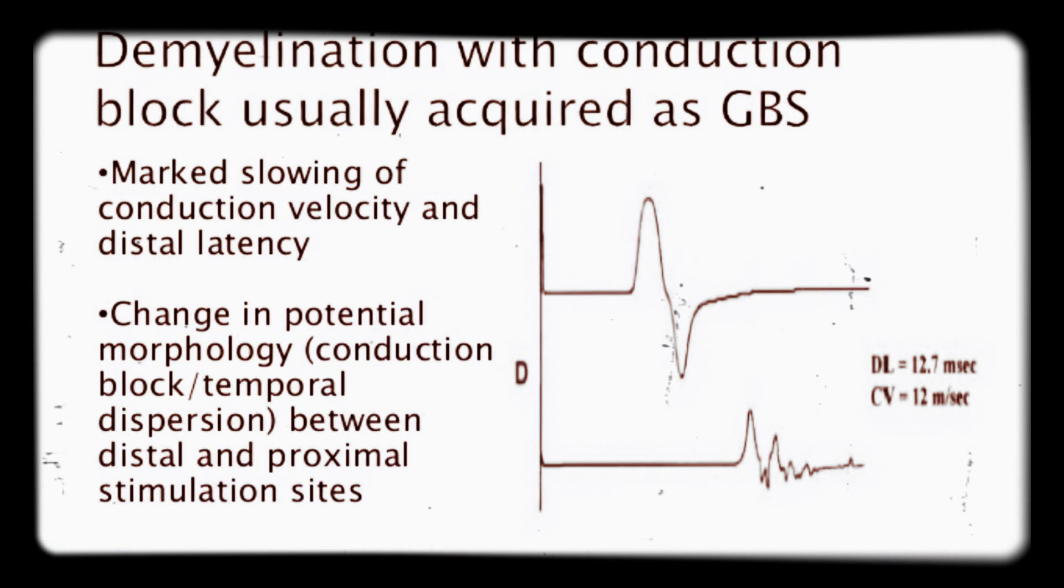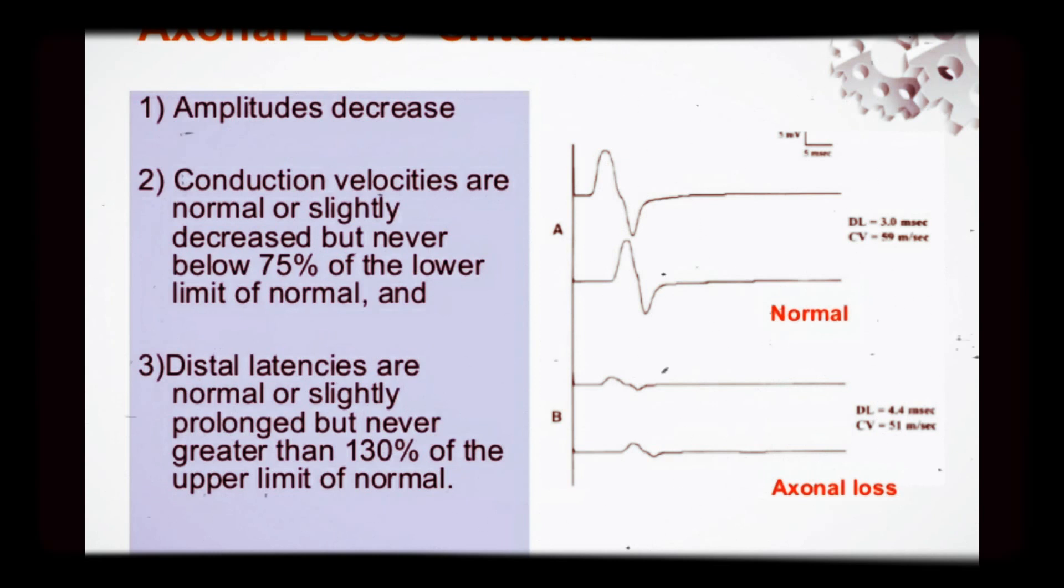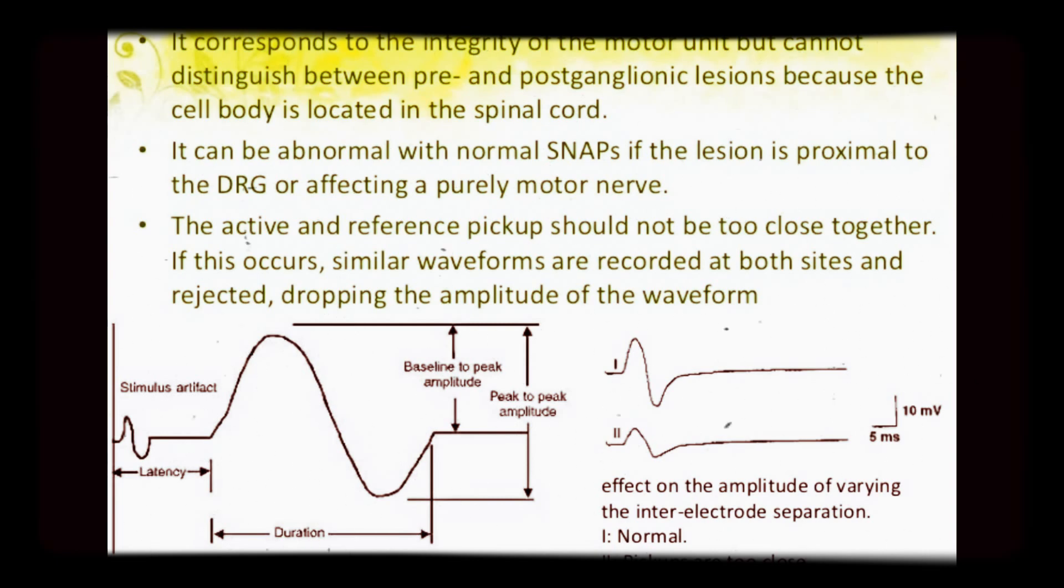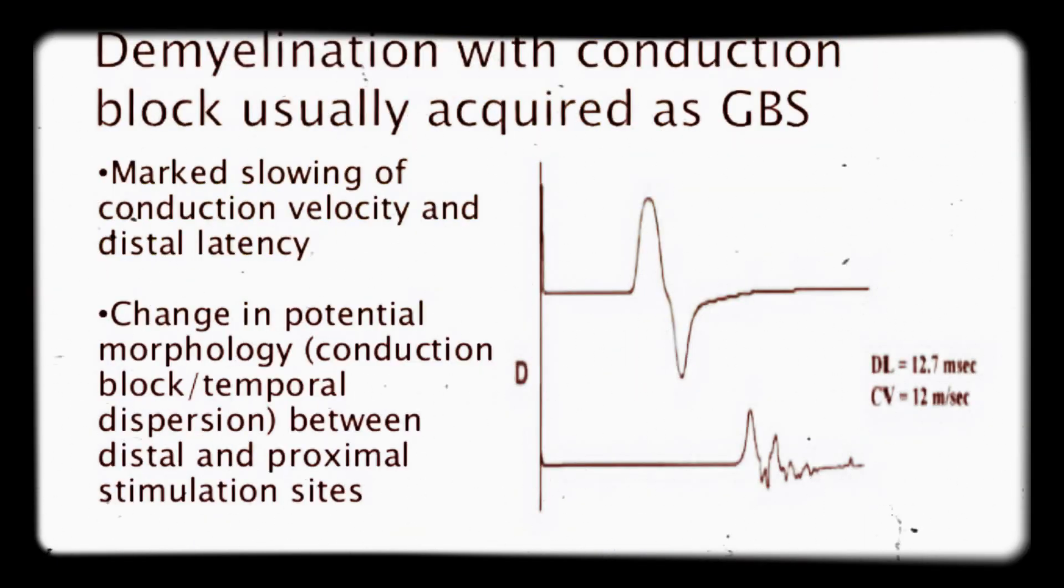In the degenerative condition, NCV study shows amplitude - baseline, positive peak and negative peak. Base to positive peak and base to negative peak amplitude is reduced. In demyelinating disorder, conduction velocity is reduced because the saltatory propagation is disturbed due to the demyelination.